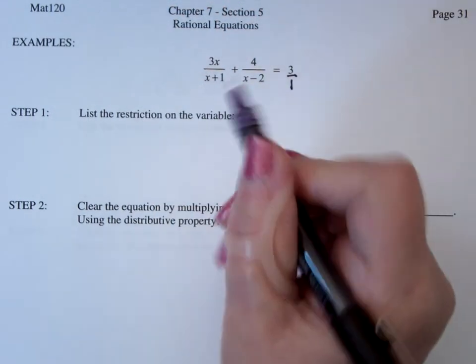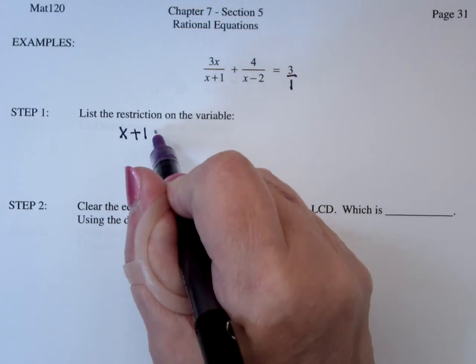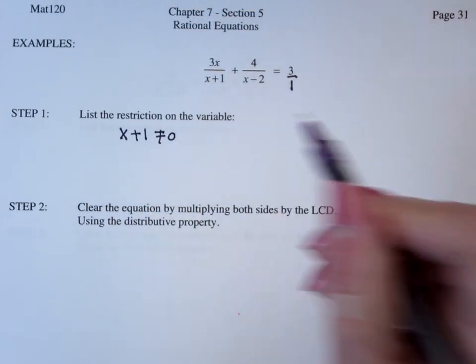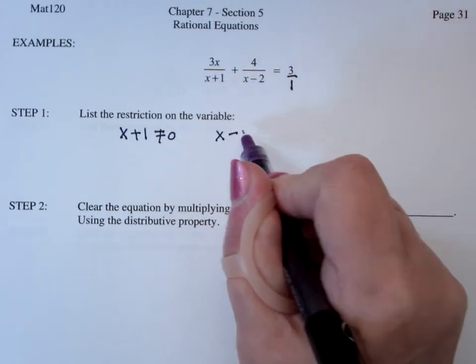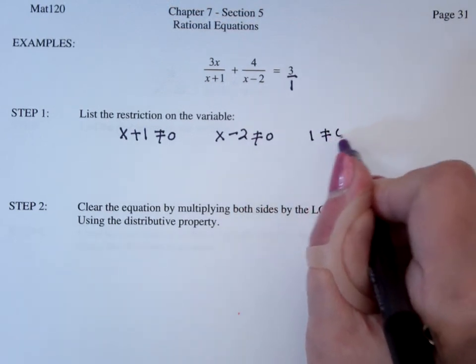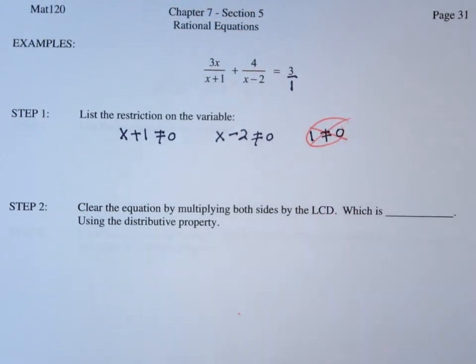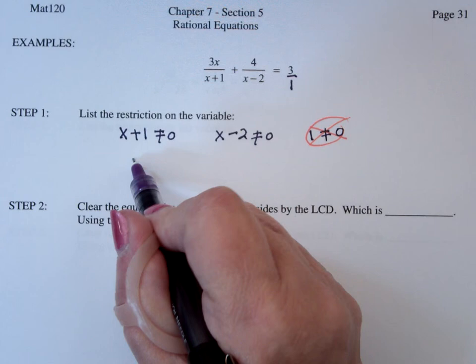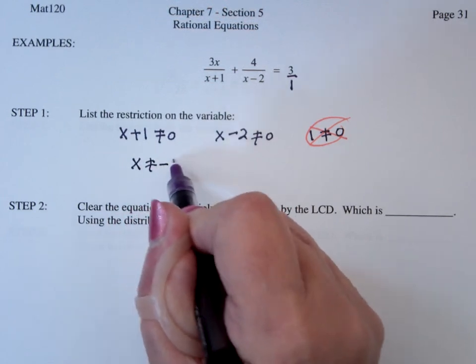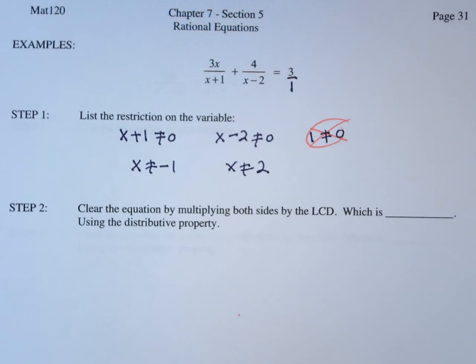So the denominators are x plus 1, and that can't be 0. And x minus 2, that can't be 0. And the other one is 1, that can't be 0. So this is a constant, makes no sense, because 1 can never be 0. This tells me that x can't be minus 1, x can't be 2. It can be anything other than those two.